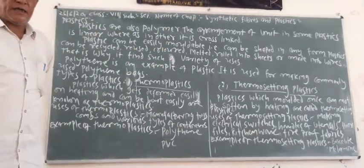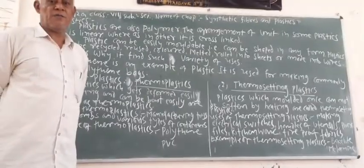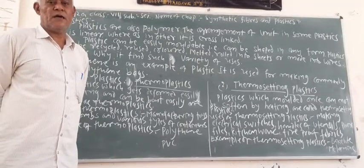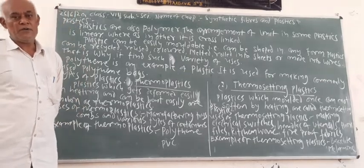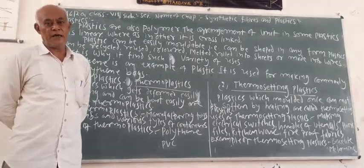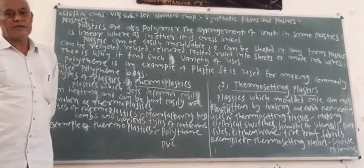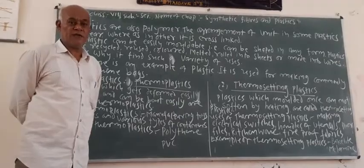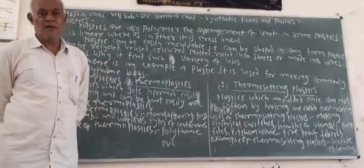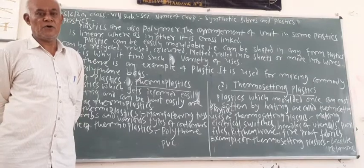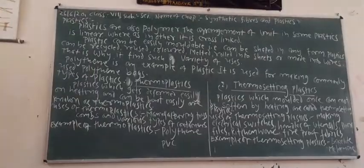Today we learnt about plastic. Plastics are of two kinds: thermoplastic and thermosetting plastic. We learnt about their definitions, uses, and examples. Now the question for you is: write three points of difference between thermoplastic and thermosetting plastic. Thank you.